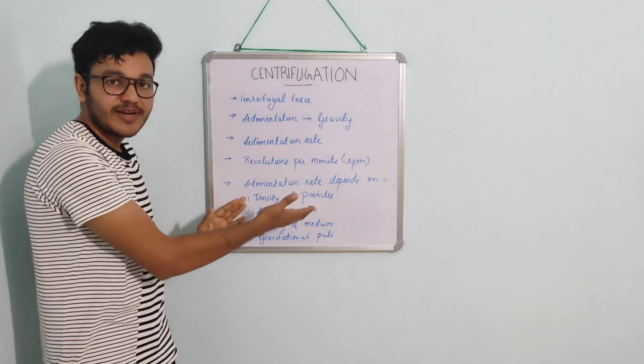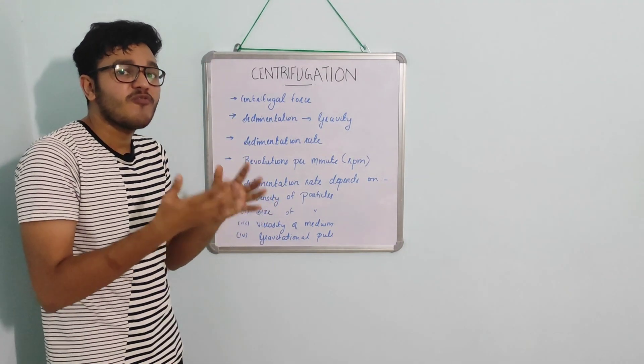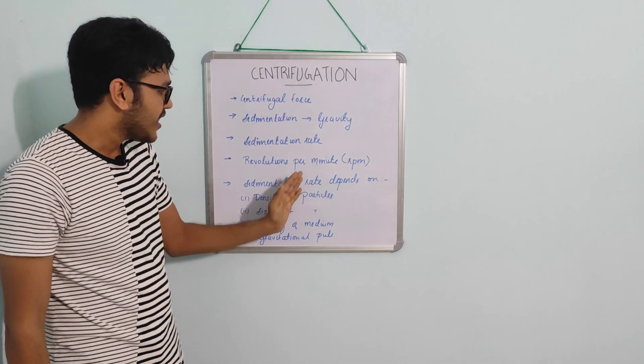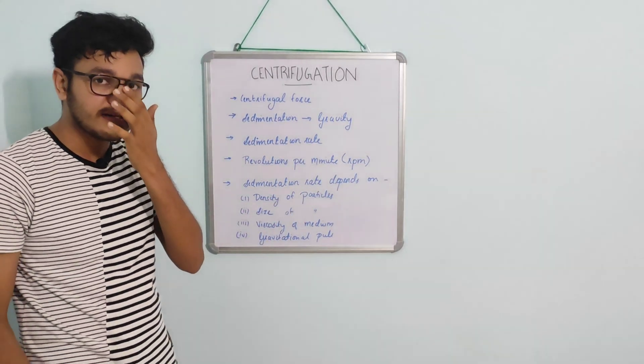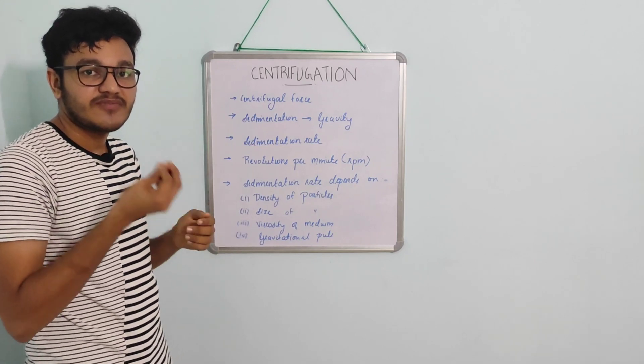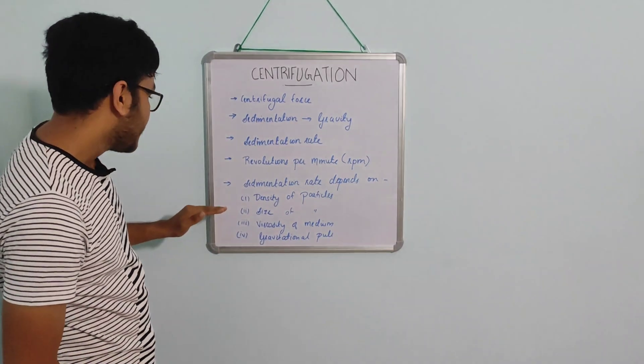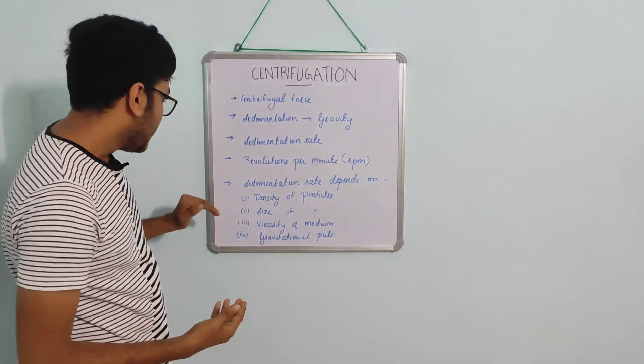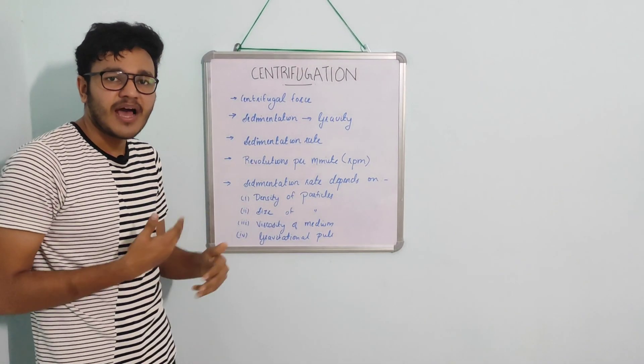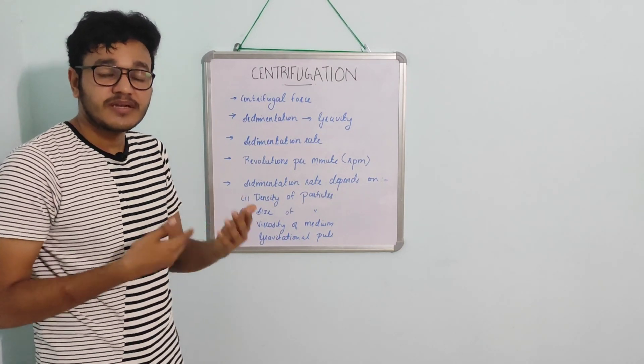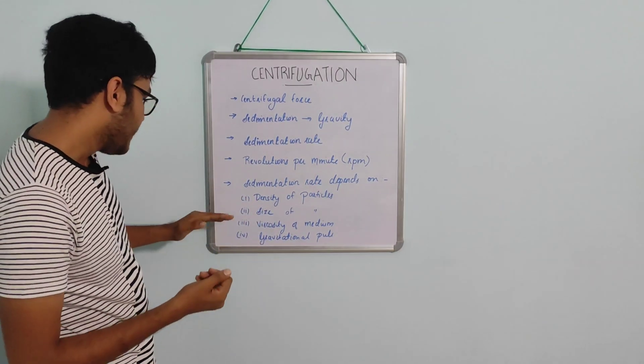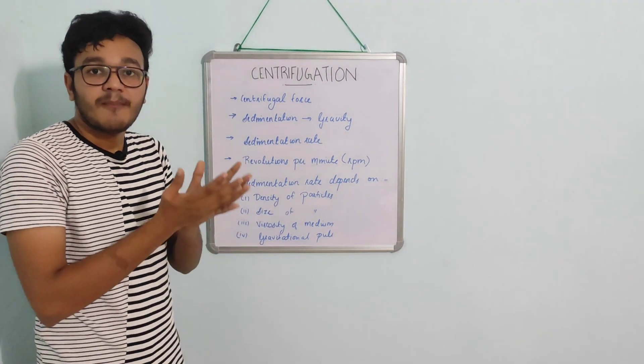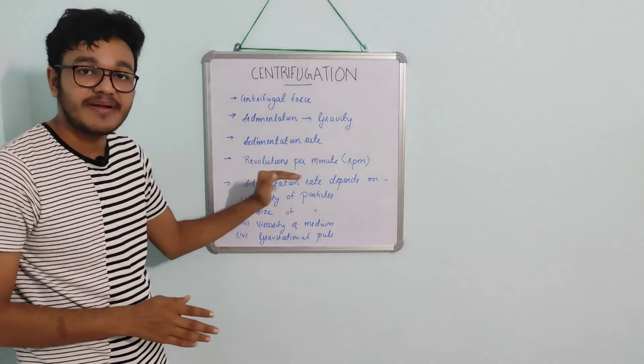The sedimentation rate is the rate of movement of particles in the solution and is affected by a few factors. The first one is density of the particles. If particles are denser, they sediment first. Second is size of the particles. If the size is very high, it sediments first. Third is viscosity of medium. High viscous solution takes more time for sedimentation. The last one is gravitational pull. If the gravitational pull is more, it causes sedimentation of the particles. These are the four factors which affect the sedimentation rate.